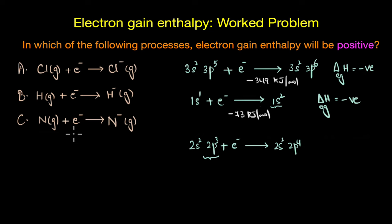Not just that, nitrogen is actually a small atom and adding an electron is not very welcome here because the added electron goes to the second energy level n equals 2 and it experiences strong repulsion from the already existing electrons. Therefore to overcome this repulsion we need to supply energy which is why the electron gain enthalpy of nitrogen is positive.